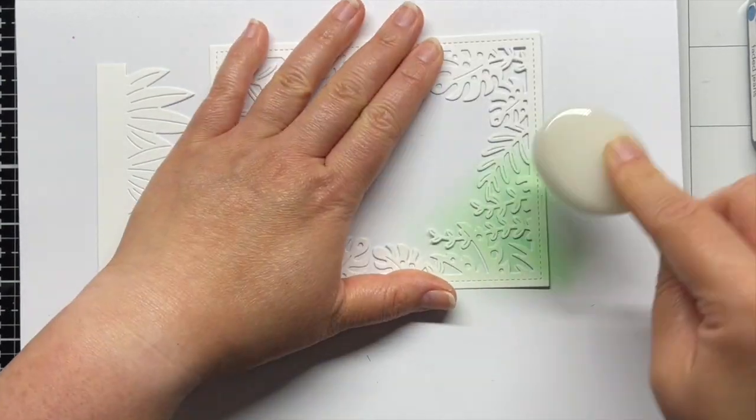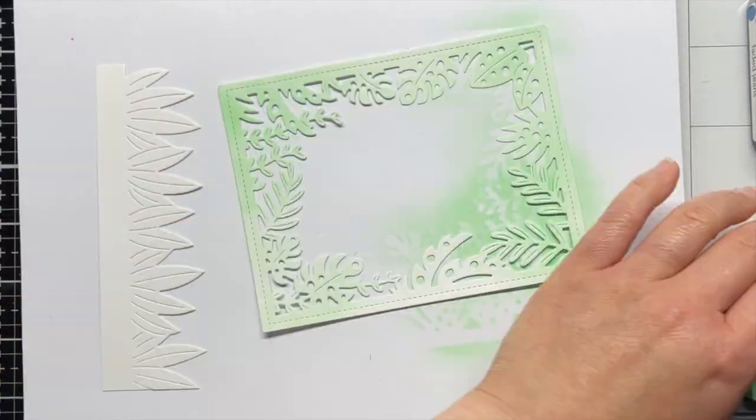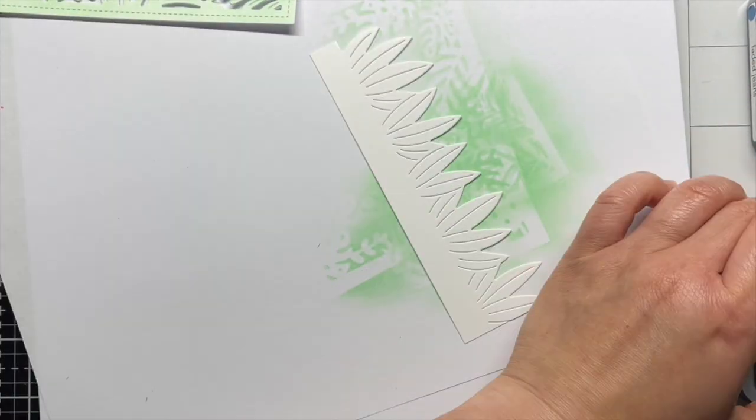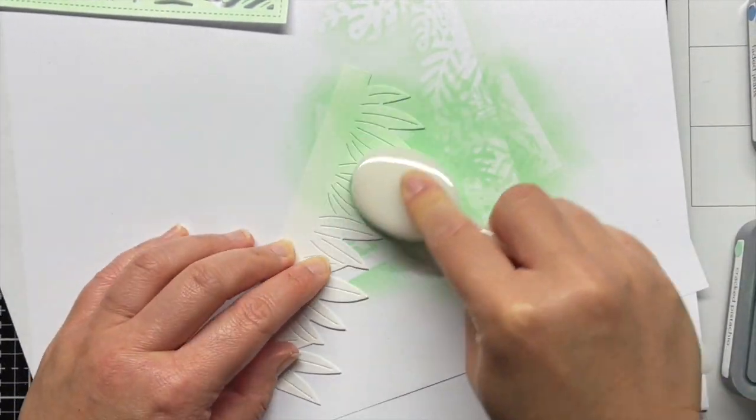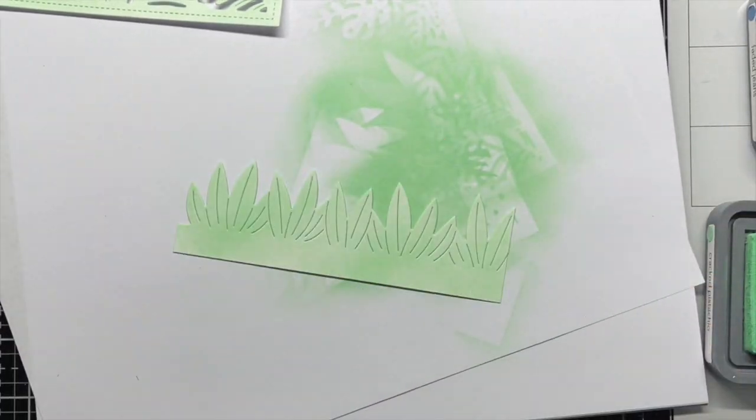I start by using a blending brush to apply cracked pistachio, peacock feathers, and faded jeans distress oxide ink randomly across the Tropical Leaves backdrop cut from Strathmore Bristol Smooth cardstock. Then I blend the same colors, concentrating the darker colors on the bottom of the Tropical Leaves border panel.